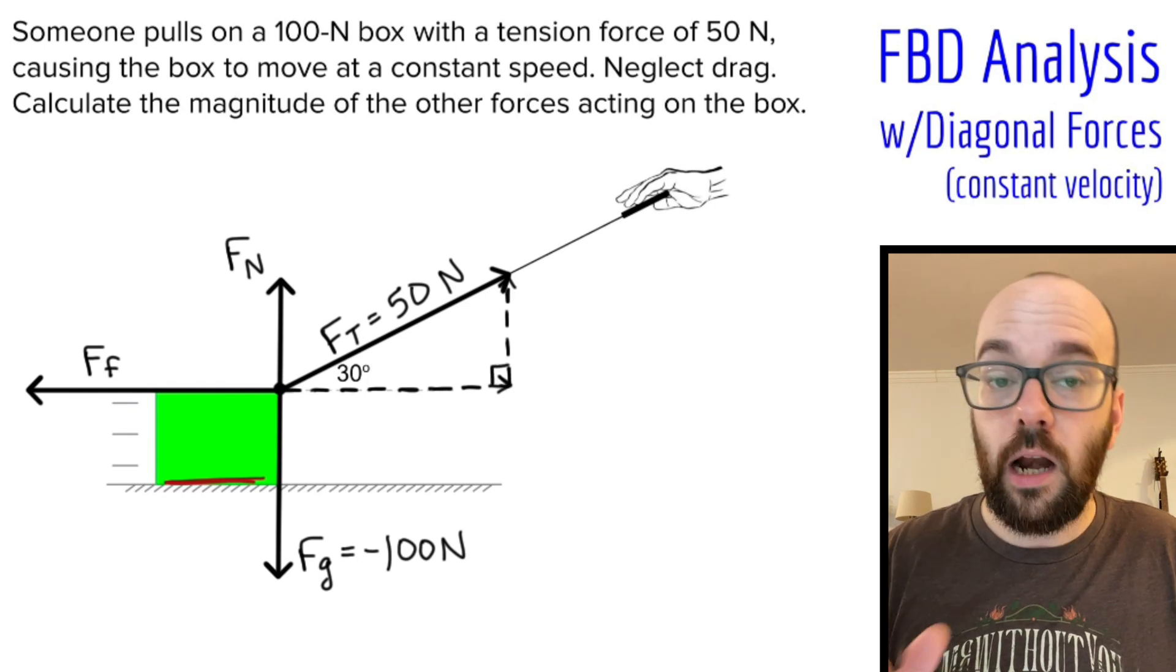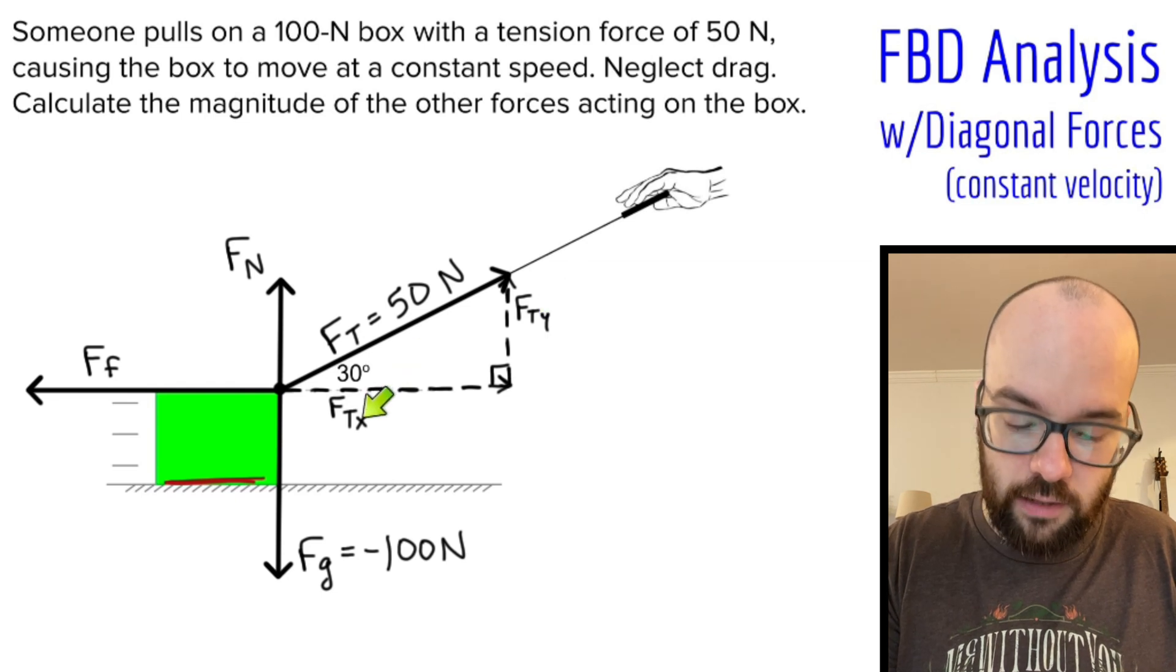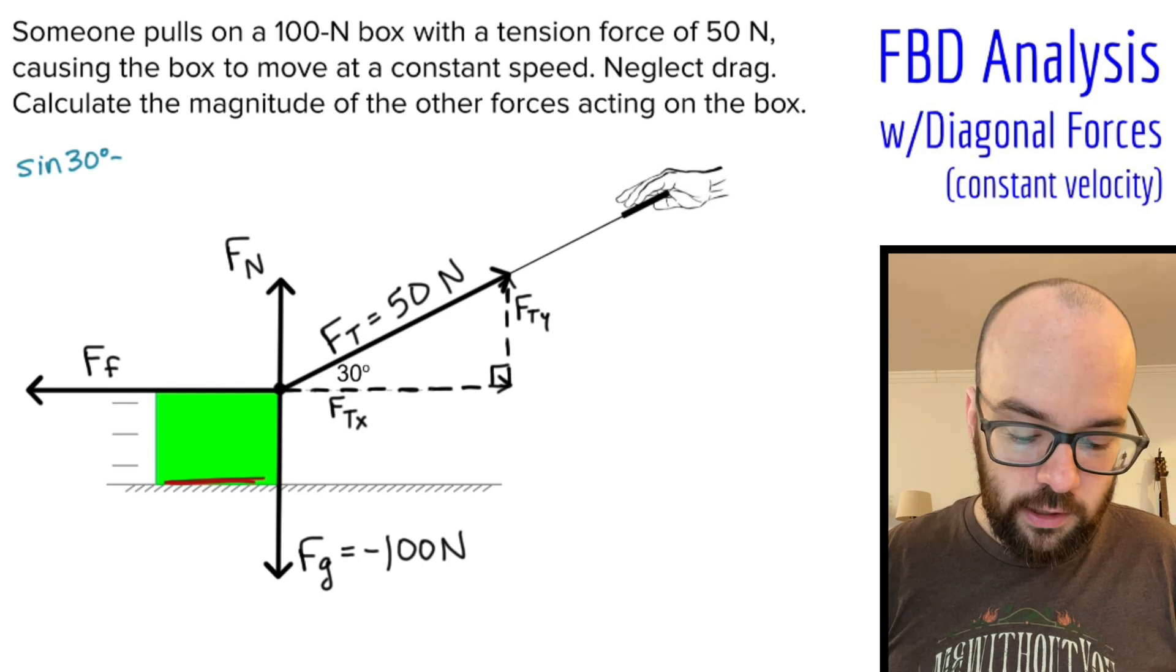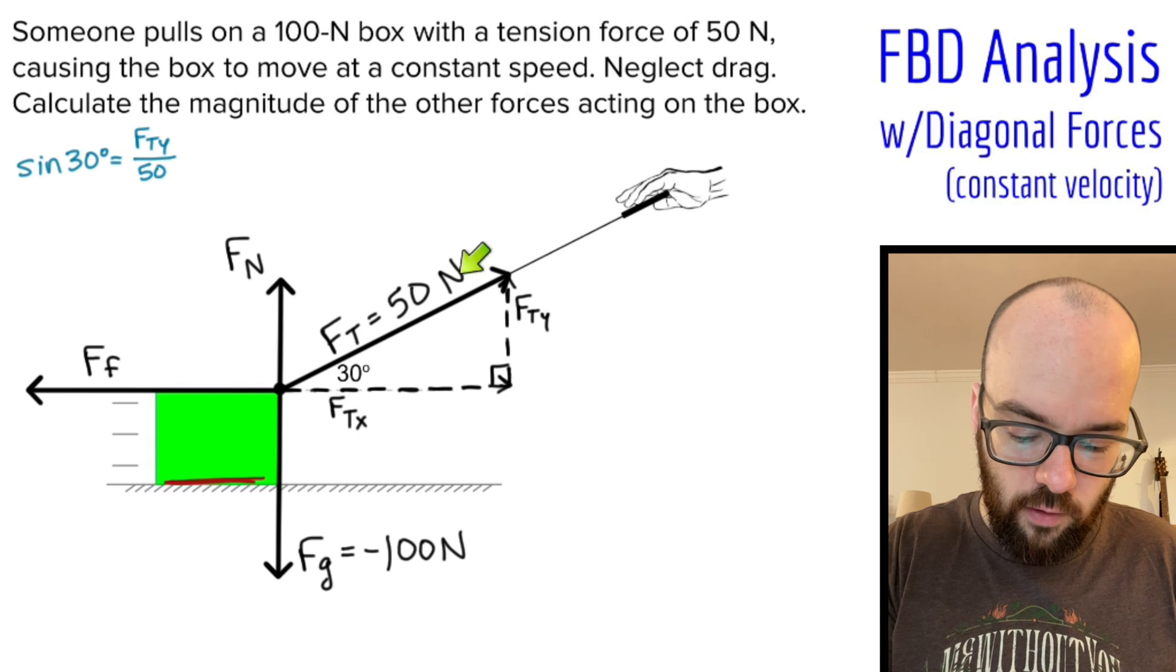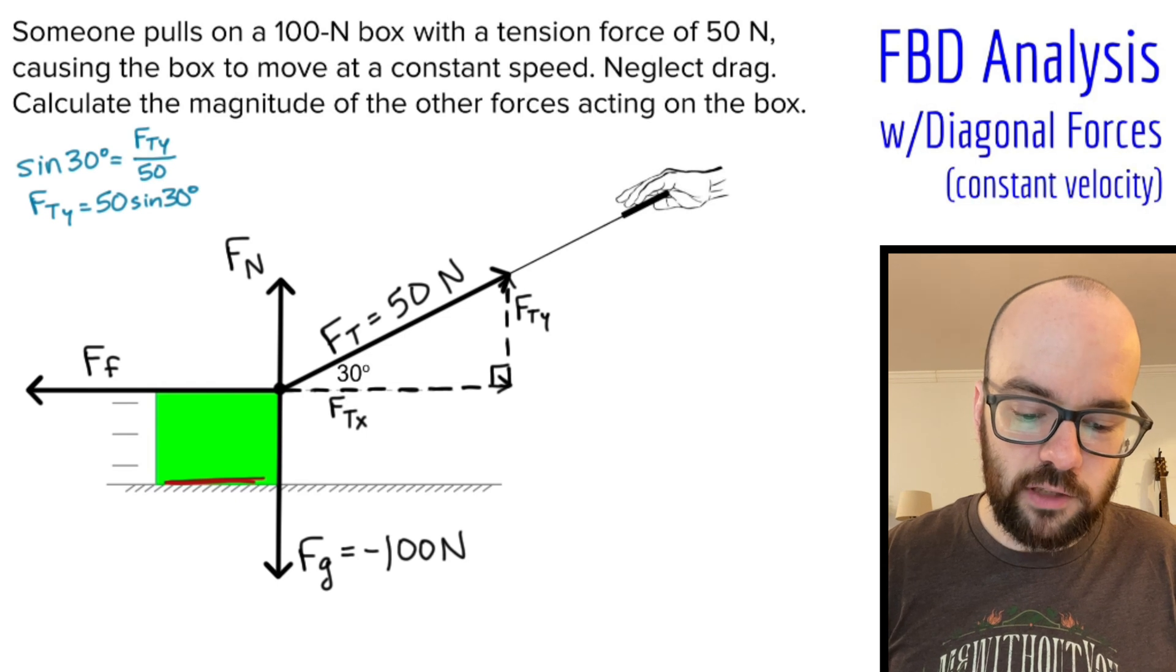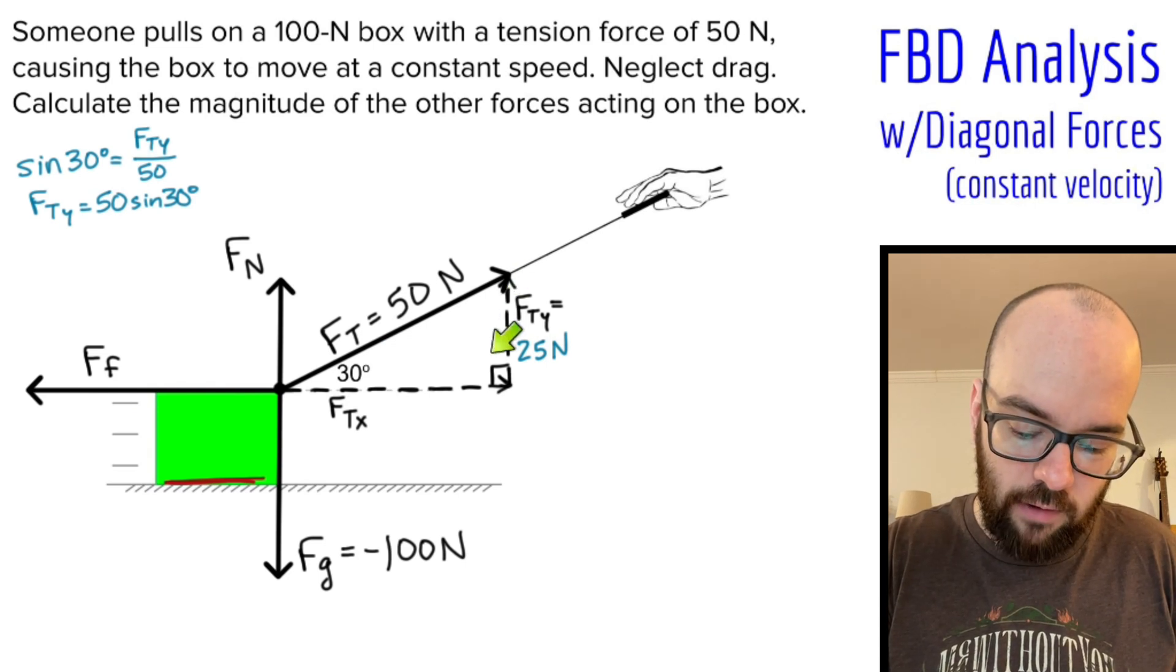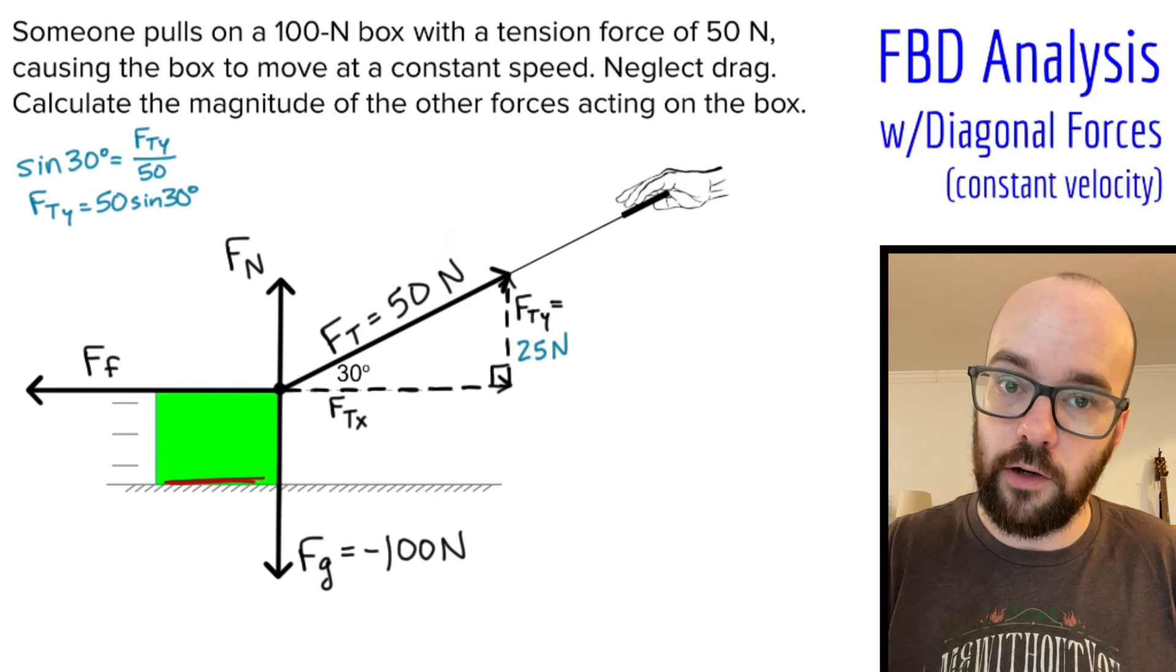Those components make a 90-degree angle, and I'm going to label those components FTY and FTX to represent the vertical component and the horizontal component. I'm going to use a couple trig functions to solve for what those components are. So I'm going to use sine of 30 degrees equals FTY over 50, and then I'm going to solve for FTY by multiplying by 50 on either side, and I get FTY equals 50 sine of 30. Put that into the calculator, make sure you're in degrees, and you get 25 newtons.